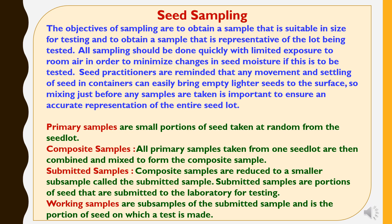The samplings are categorized in four types. First is primary samples: small portions of seeds taken at random from the seed lot. Then composite samples: all primary samples taken from one seed lot are combined and mixed to form the composite sample. Then submitted samples: composite samples are reduced to a smaller sub-sample called the submitted sample, which is the portion of seeds submitted to the laboratory for testing. Then working samples: these are sub-samples of the submitted sample and are the portion of seed on which a test is made.